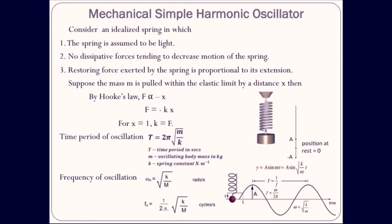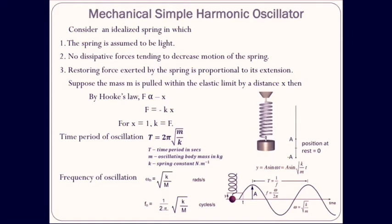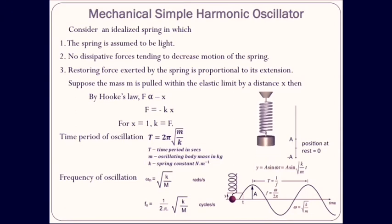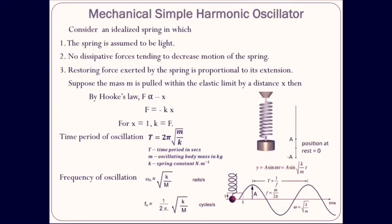The time period of oscillation is given by T equals 2 pi times the square root of m over k, where T is in seconds, m is the oscillating mass in kg, and k is the spring constant in Newton per meter. The angular frequency omega equals the square root of k over m, in radians per second. The natural frequency is given by f equals 1 over 2 pi times the square root of k over m, which equals omega over 2 pi, with the unit being cycles per second or hertz.